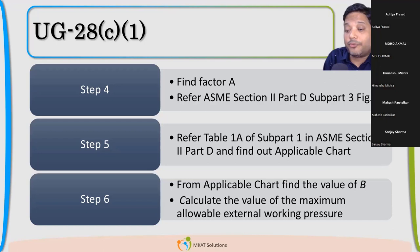Once we have the factor B, with factor B, using this formula given by code, we can calculate the maximum allowable pressure for that cylinder. That is the overall procedure.